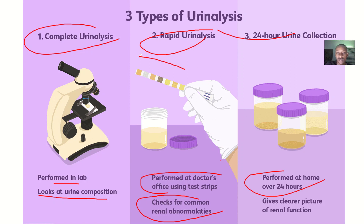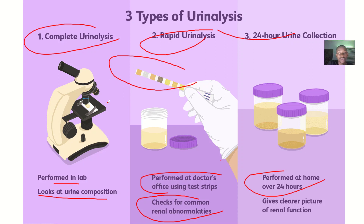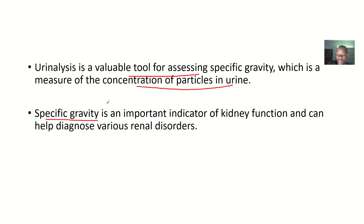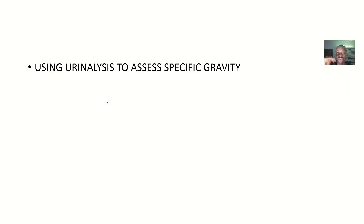Urinalysis uses the strip, and we spoke much more on the strip. But we can also use the microscope — do a stain and observe the urine sample. That way you get to see the particles in the urine, and it will help you determine the specific gravity and know if the urine is more concentrated than normal. I'll see you guys in the next video on the uses of urinalysis.